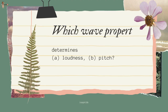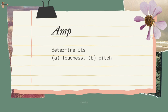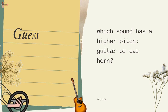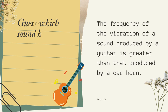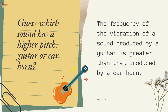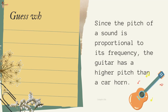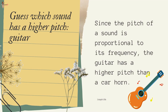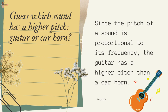The wave property that determines loudness is amplitude. To determine pitch: the frequency of vibration of a sound produced by a guitar is greater than that produced by a car horn. Since pitch is proportional to frequency, the guitar has a higher pitch than a car horn.